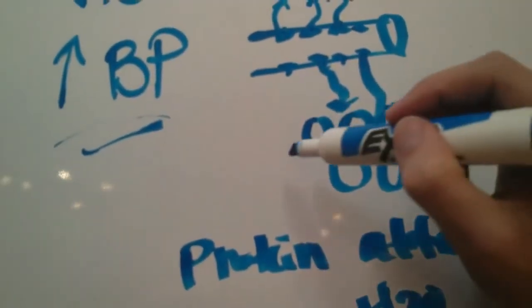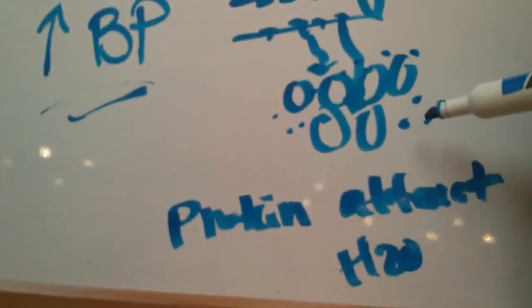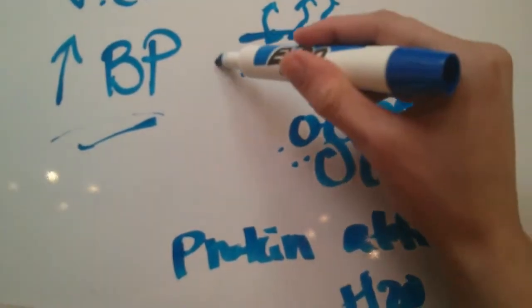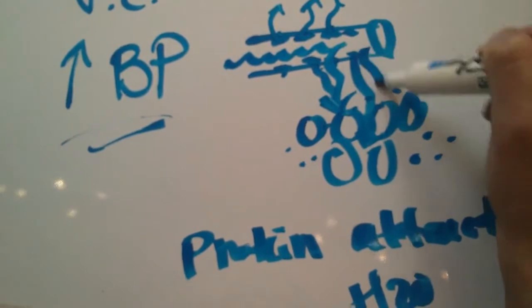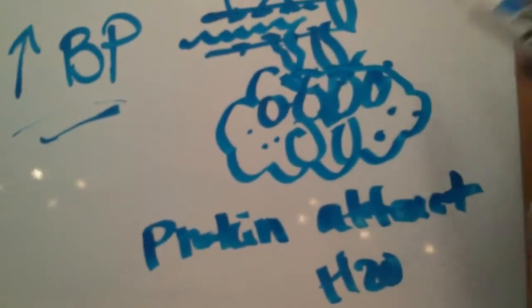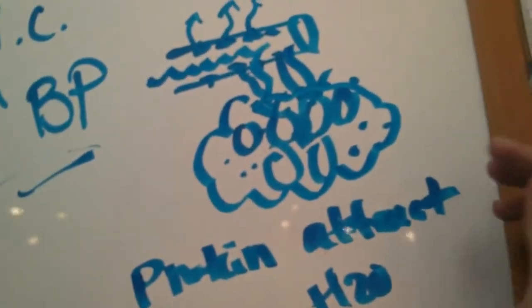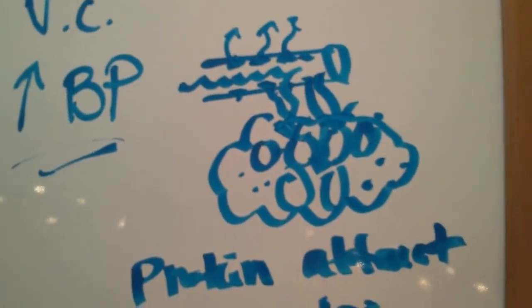So all the fibronectin is chilling out in the interstitial spaces. Now this protein, the fibronectin, is going to attract water. All the water from inside the vessels are going to want to come out as well, diffuse across and start collecting in the cellular area, which is going to cause the edema, which is the swelling of the tissues.